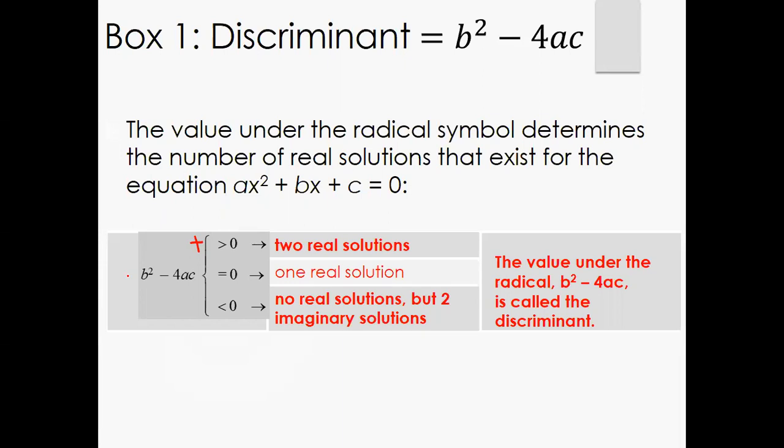If your value equals zero, that means you have one real solution. So what that looks like as a graph is that if it's greater than zero, that means your quadratic formula or function is going to cross the x-axis twice.